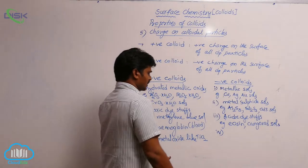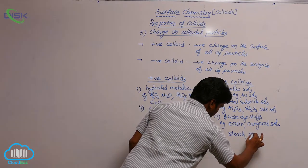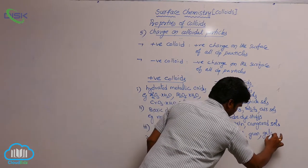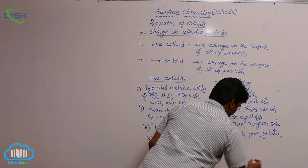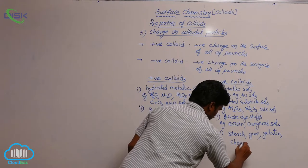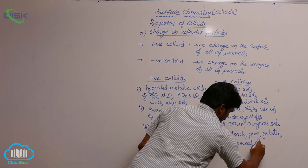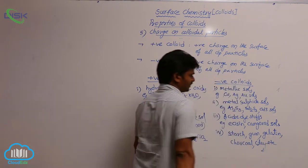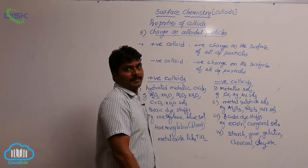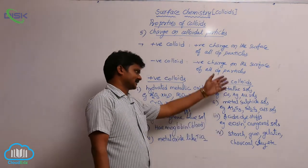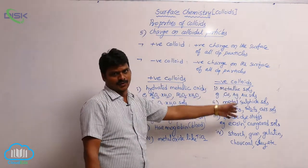Third, acidic dyes such as eosine and congo red are organic dyes that when dissolved in water form colloidal solutions — so eosine and congo red salts are examples of negative colloids. Additionally, starch, gum, gelatin, charcoal, clay, etc. also form negative colloids. This completes the list of some positive and negative colloids.